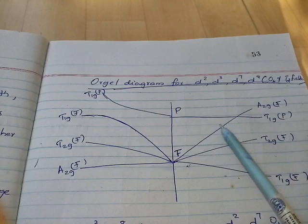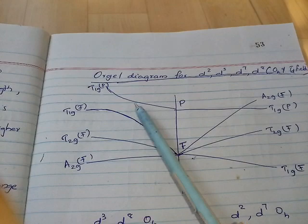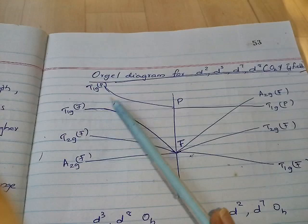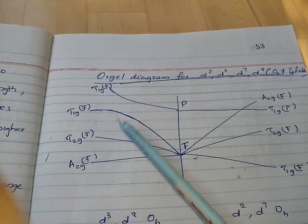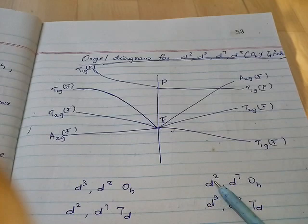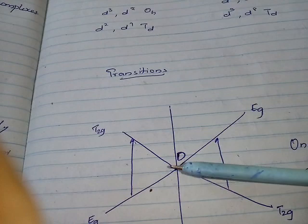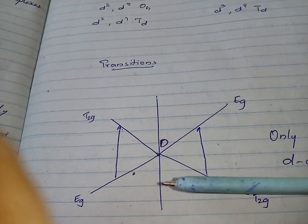Here we can see that these two terms are the same — one from F and one from P — but because of repulsion they never cross each other. Instead, some sort of curve occurs in this line. This is the Orgel diagram for D3, D8 octahedral and D2, D7 tetrahedral complexes.